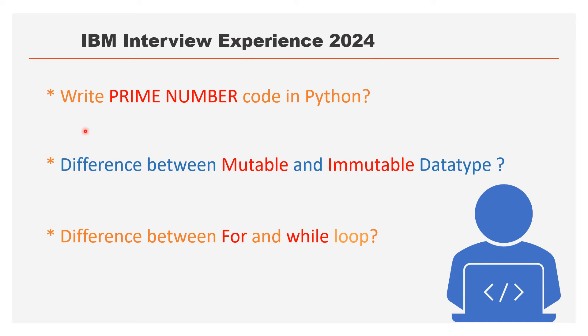The next question is a coding question: write a prime number program in Python. This can be completed in two to three lines. The interviewer will ask you to share your screen and open Notepad to write the code, or the interview interface may have a coding section. Even if your code is wrong, that's okay — you should be able to explain your approach. Prepare 10 to 20 basic Python coding questions from Google.